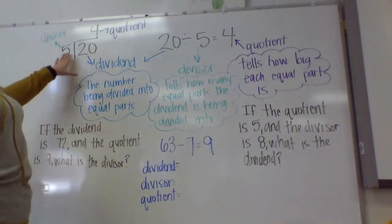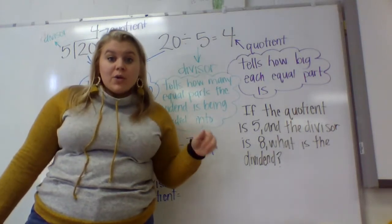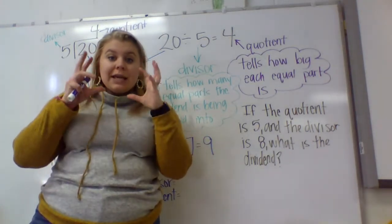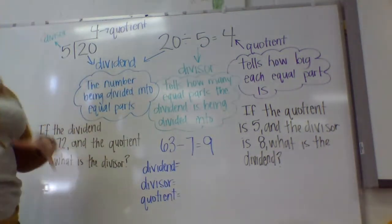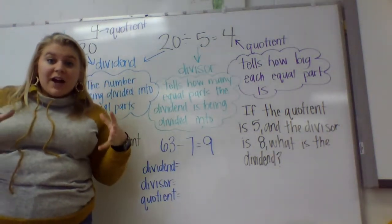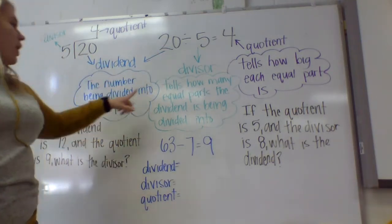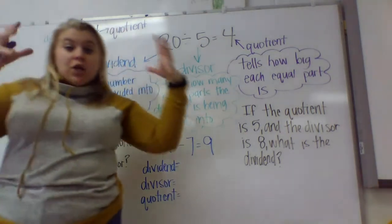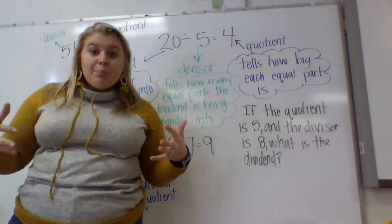So if these equations represent the division sentence 20 divided by 5 equals 4, 20 is what we call the dividend. The dividend is the total number that's being divided into equal groups. So in 20 divided by 5 equals 4, our dividend is 20. 20 is what we're dividing up into equal groups. It's going to be your bigger number.